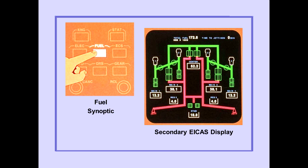Pushing the fuel synoptic switch on the ICAST display select panel displays the fuel synoptic on the secondary ICAST display. The display provides real-time information about the status of various valves, tank quantities, and flows.